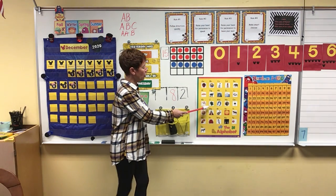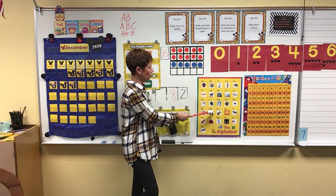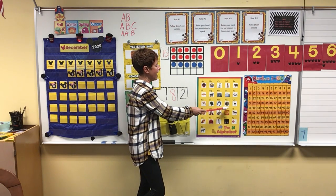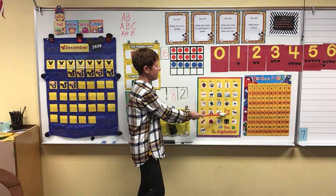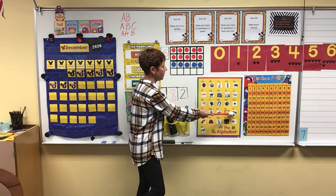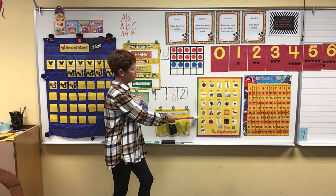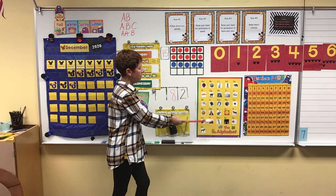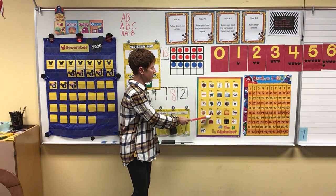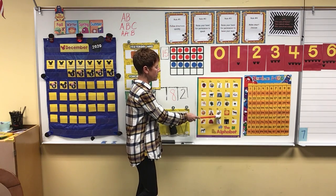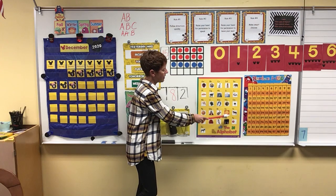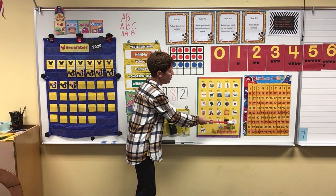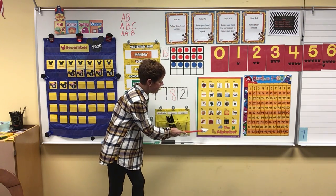P — pumpkin. Q — queen. R — rabbit. S — sun. T — tiger. U — umbrella. V — volcano. W — watch. X — X-ray. Y — yo-yo. Z — zebra.